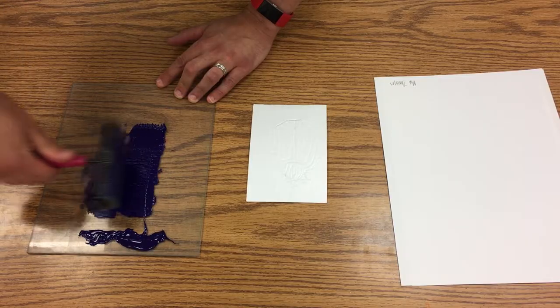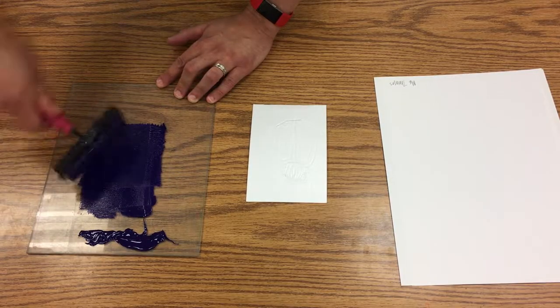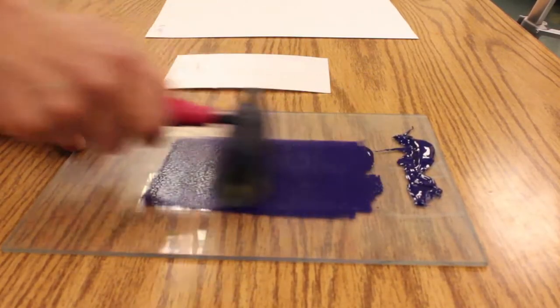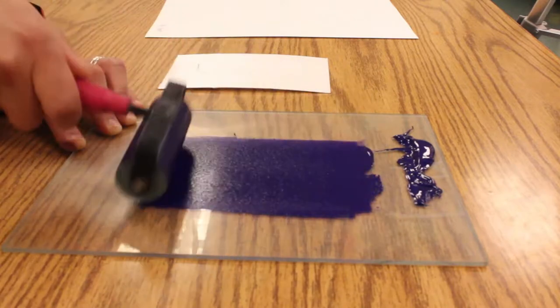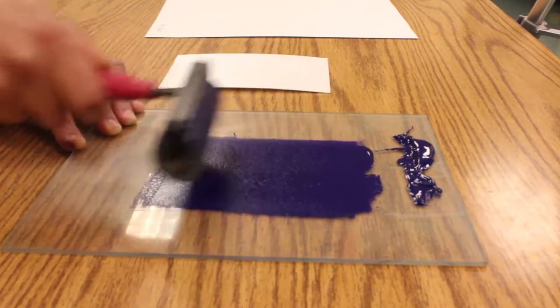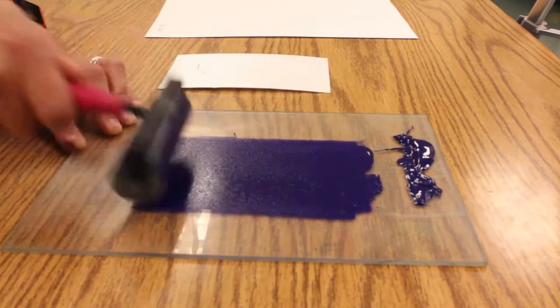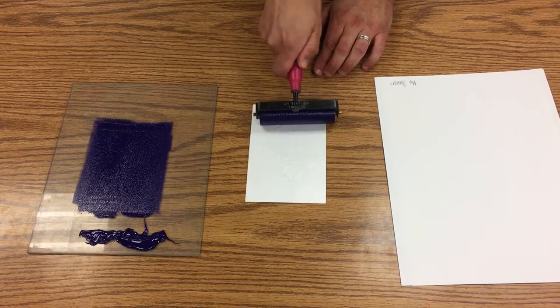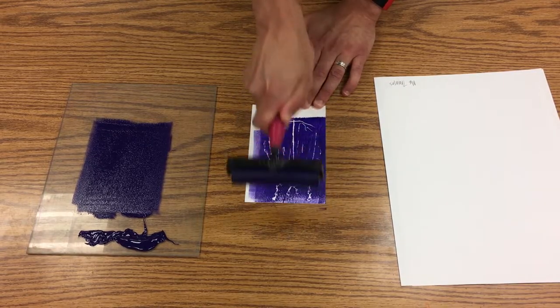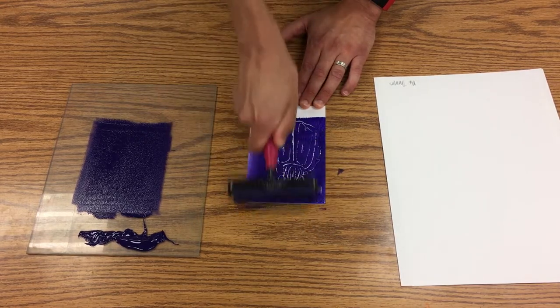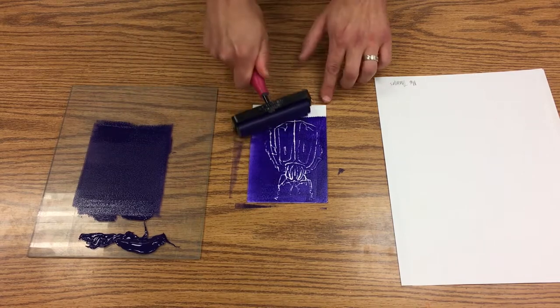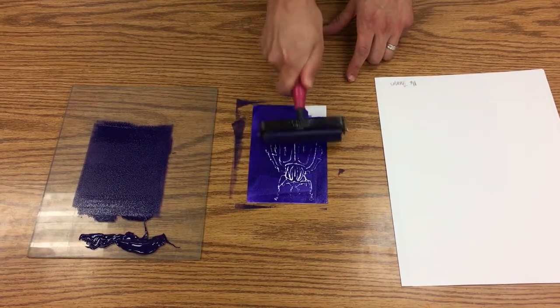If you listen carefully, it kind of sounds like velcro. So I don't want to do that forever because that's just going to dry the ink out. Then I want to evenly cover the printing block with ink. A little bit's going to get on the table.